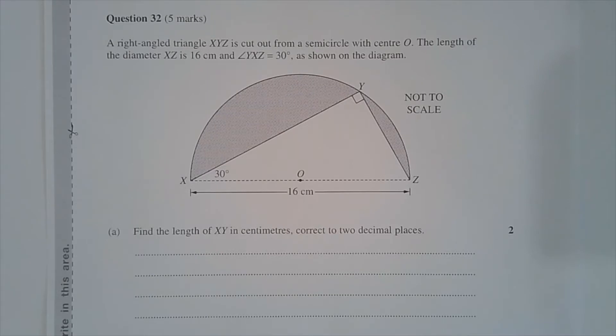Question 32. A right angle triangle XYZ is cut out from a semicircle with centre O. The length of the diameter XZ is 16 cm and angle YXZ is equal to 30 degrees, as shown in the diagram.